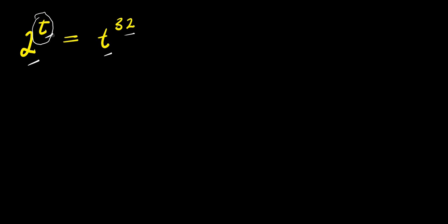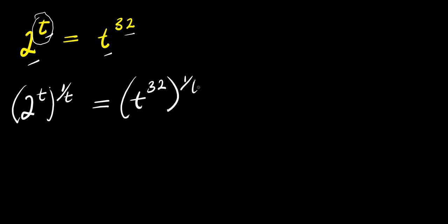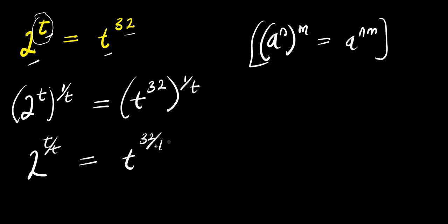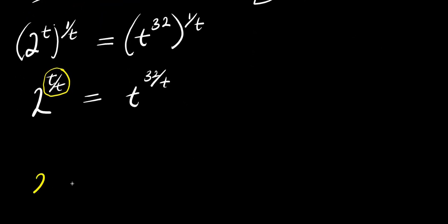I can start by eliminating this t, and that can happen if I multiply this exponent by 1 over t. So I have 2 power t raised to the power of 1 over t, and this equals t power 32 raised to the power of 1 over t. Applying the index law — a power n raised to the power of m equals a power n times m — you get 2 power t times 1 over t, which is 2 power 1, equals t power 32 over t. Since t over t is 1, we have 2 equals t power 32 over t.